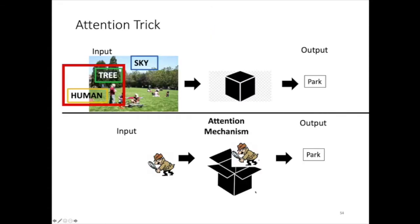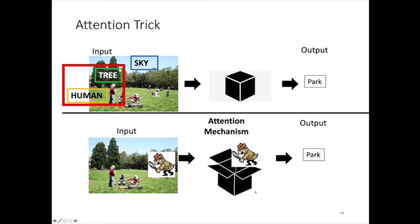What is attention? This intuitive graph tries to explain it. In a visual task, a standard convolutional net sees humans, trees, and sky, and summarizes it as a park. The attention model specifically tries to focus on very specific, important parts — for example, focusing on the combination of trees, grass, and human together in that region, and identifying this as a park. So attention is about putting some importance on parts of the input.